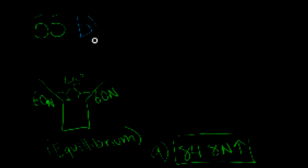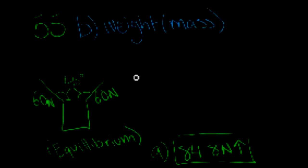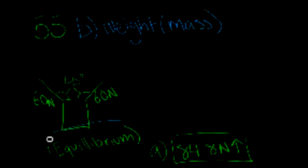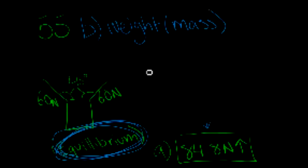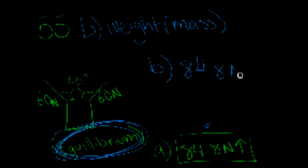In Part B of the question, it is asking for the weight of the light. Because the object, the stoplight, is in equilibrium, the force of gravity is going to be equal to the resultant force of the cables. So, it is also 84.8 newtons in the down direction.